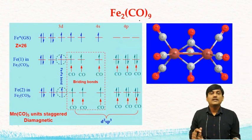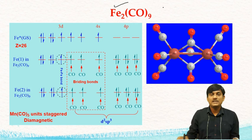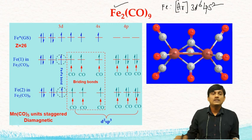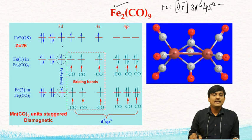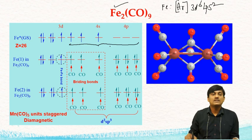Let us take Fe₂CO₉. In this case also, we have two iron metal atoms. The electronic configuration of Fe is argon, 3D6, 4S2. In the presence of CO ligands, there is no rearrangement of electrons, and there is d²sp³ hybridization involving 2 d-orbitals, 1 s-orbital, and 3 p-orbitals.